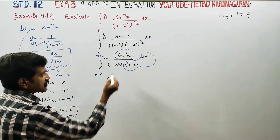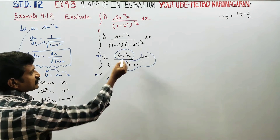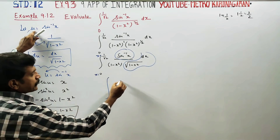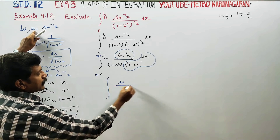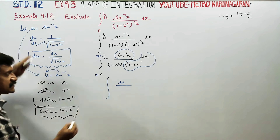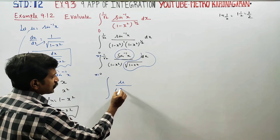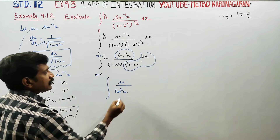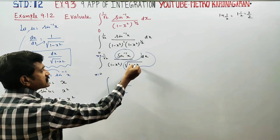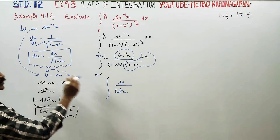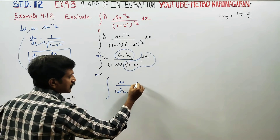Mapping all substitutions: sin⁻¹x becomes u; (1 minus x²) becomes cos²u; and dx divided by root of (1 minus x²) becomes du. So we have all substitutions ready.